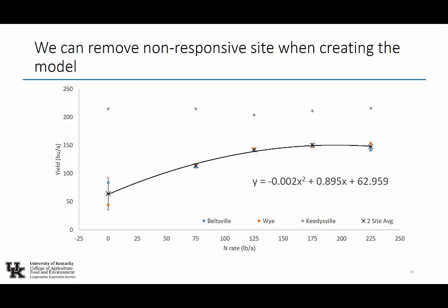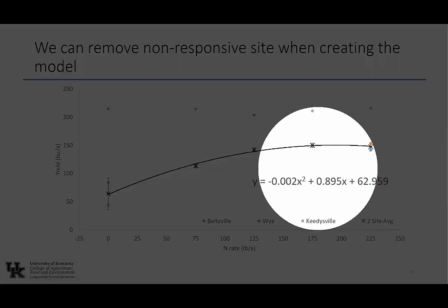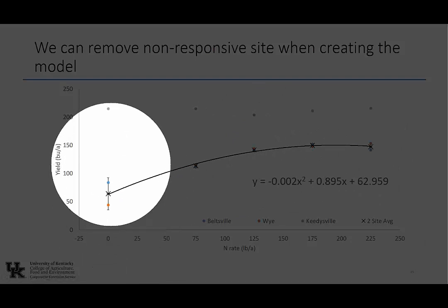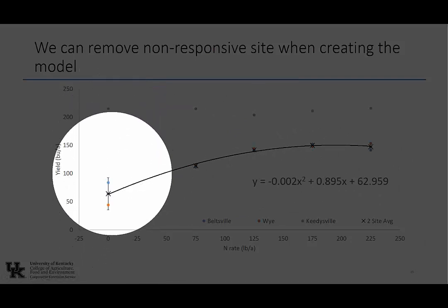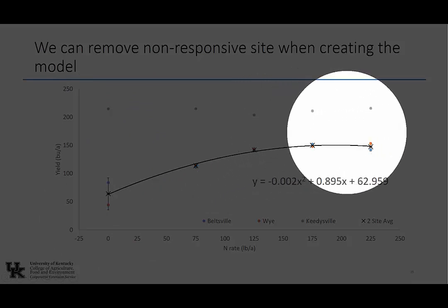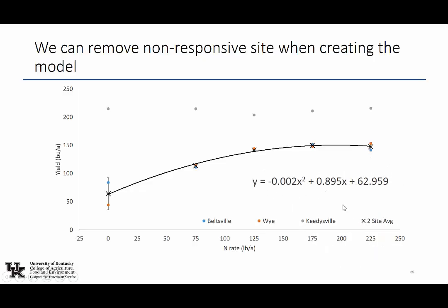If we drop out that non-responsive site and use just the two normal sites, my prediction becomes more precise: max yield at 163 bushels with 224 pounds per acre, and the right economic rate is 199 pounds per acre for 162 bushels. I've dropped my nitrogen rate 25 pounds but only lost a bushel — diminishing return. So to offset risk, I apply 30 pounds more than the economic optimum. The invisible hand of the market again: farmers find the right rate for profitability without doing the derivatives.